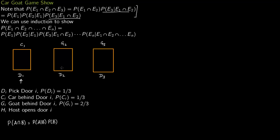Let us work through the mechanics of the problem. Case 1: contestant picks door 1 and there is a car behind it. The host cannot open door 1. He can only open door 2 or door 3, choosing either with probability one half and showing a goat. In this case, if the contestant switches, he will lose — or win — each with probability one half since the car is behind door 1.